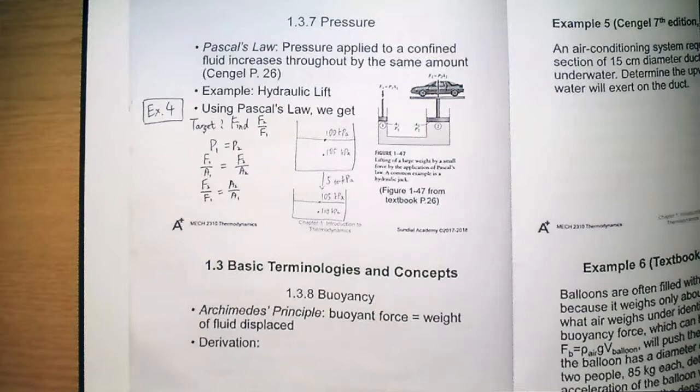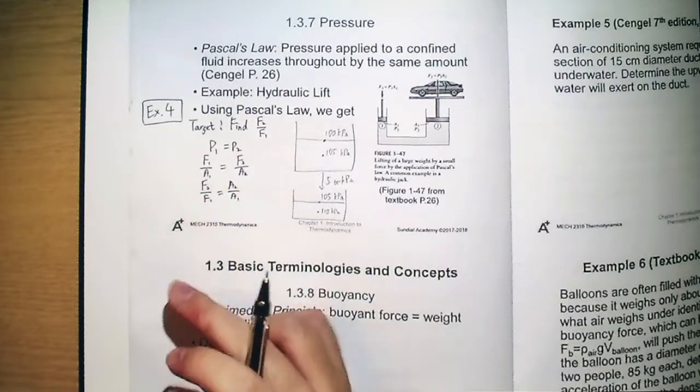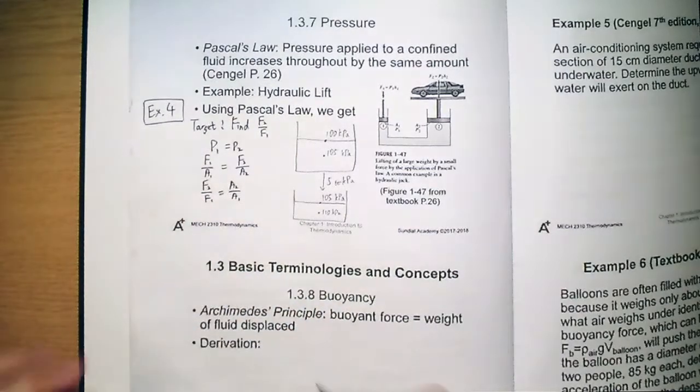And here, we can find out, actually, F2 is the force output, while F1 is the force input. And then we can find out this ratio.